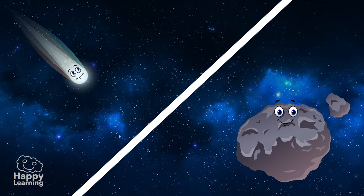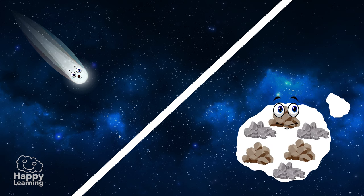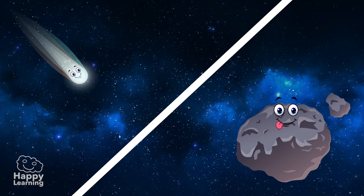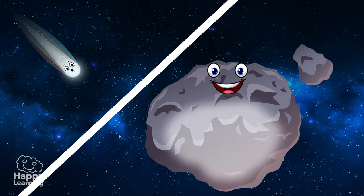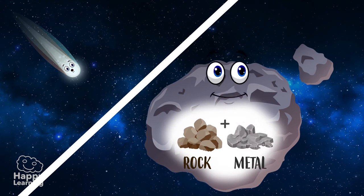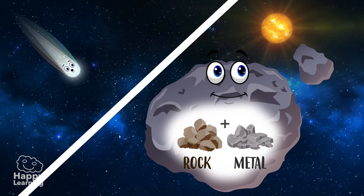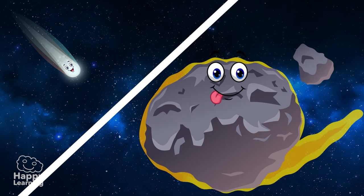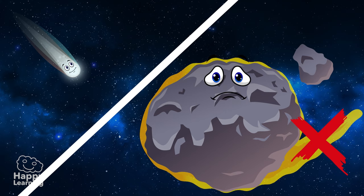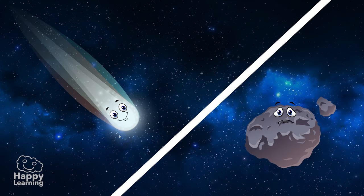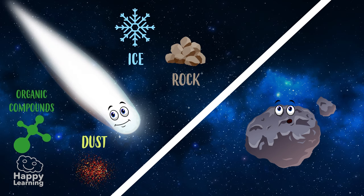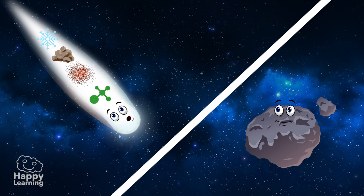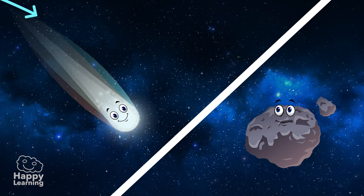Asteroids and comets are differentiated because of their composition and their size. Asteroids are usually larger than comets and are composed of rock and metal, so the Sun's heat hardly affects them. Also, asteroids don't have a tail. Comets are composed of ice, rock, dust, and organic compounds, and are recognized because they do have really long tails.